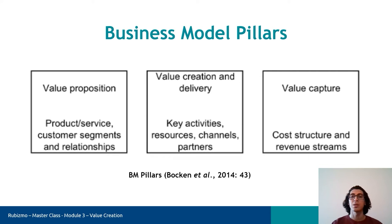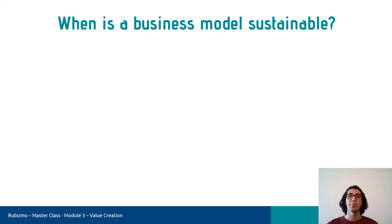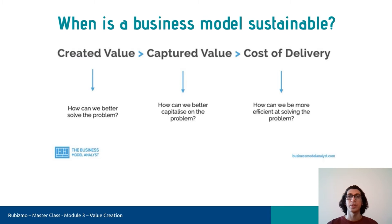Generally, three main pillars are identified through which a business model can be analyzed to examine the issues of sustainability. The first is value proposition, which refers to the types of product or service that a business seeks to provide. The second is value creation and delivery, which connects the business to the end customer through essential activities. The last is value capture, which points to the ways that lead to earning money through delivered processes and created value. A business model is sustainable when we create more value than we capture, and we capture more value than it costs to deliver that value.